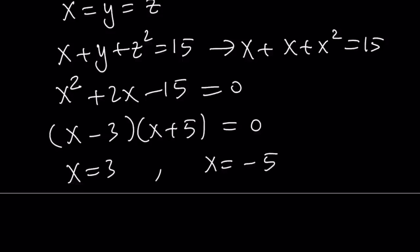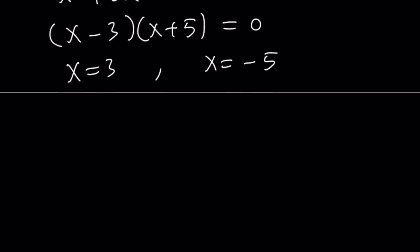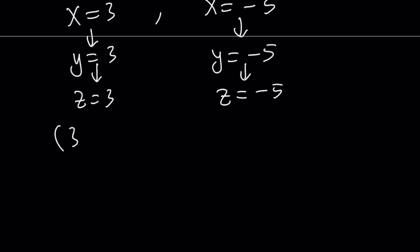And now from here we get x equals 3 or x equals negative 5. But x equals y equals z in this case. If x is equal to 3, then y is equal to 3, and then z is equal to 3. And from here, y is equal to negative 5, and then z is equal to negative 5. So, we get two ordered triples from here: 3, 3, 3, and negative 5, negative 5, and negative 5. This is the case when they're all equal.